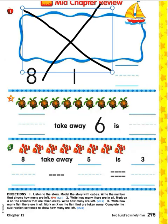One, two, three, four, five, six, seven, eight, nine, ten. There are ten sea turtles to start with, so let's write a ten on the handwriting line.